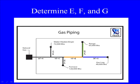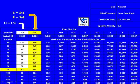We'll now size pipelines E, F, and G. The only thing to remember is E has to carry both the range and the gas log. Going back to the gas table, you'll see that E and F are both 3 quarter inch pipe, and G would be half inch.